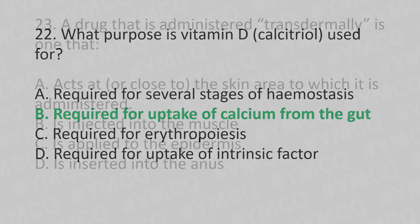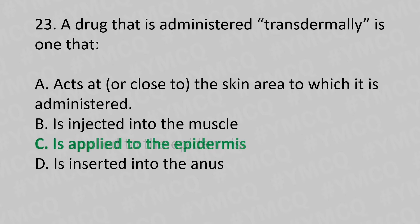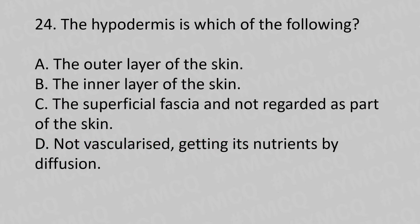Question 23: A drug that is administered transdermally is one that: Option A: acts at or close to the skin area to which it is administered. Option B: is injected into the muscle. Option C: is applied to the epidermis. Option D: is injected into the anus. The answer is Option C: is applied to the epidermis.